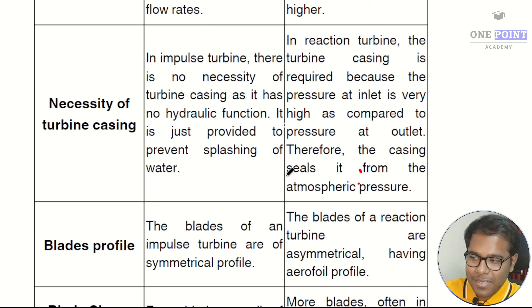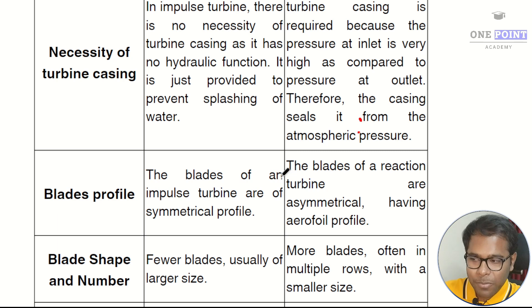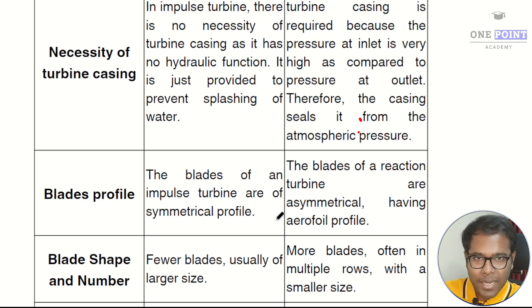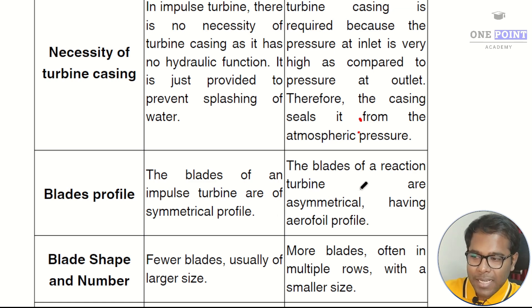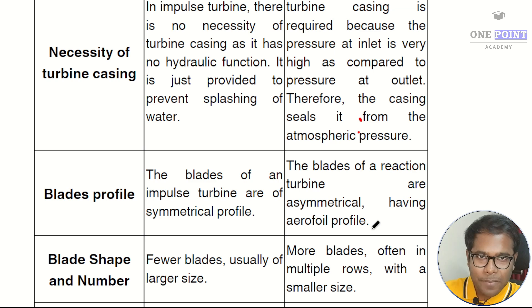The next difference is based on blade profiles. The blades of an impulse turbine are of symmetrical profile, also known as semi-ellipsoidal bucket type, whereas the blades of a reaction turbine are asymmetrical having an aerofoil profile — similar to the profile of an airplane wing.